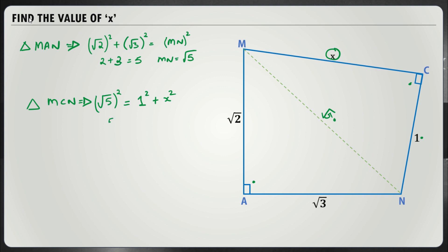So √5 squared happens to be 5, which equals 1 plus x squared. So 4 equals x squared. Taking the roots on both sides, we get x equals 2. And that's our solution. The length of MC is 2.